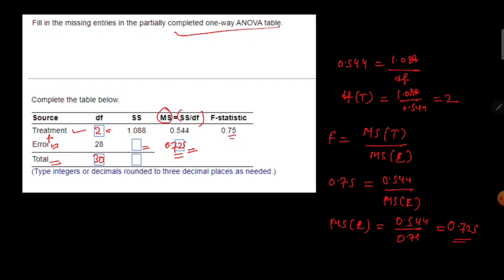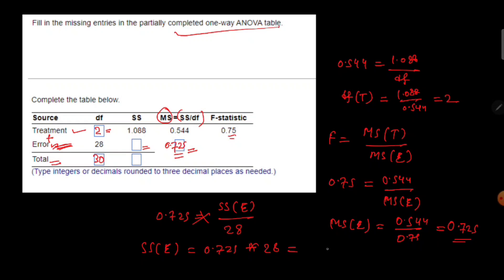Next, we're going to find the sum of squares of the error. The mean sum square is the ratio of sum of squares and degree of freedom. The mean sum square of error is 0.725 and the degree of freedom is 28, so the sum of squares of error will be 0.725 multiplied by 28, which gives us 20.3.